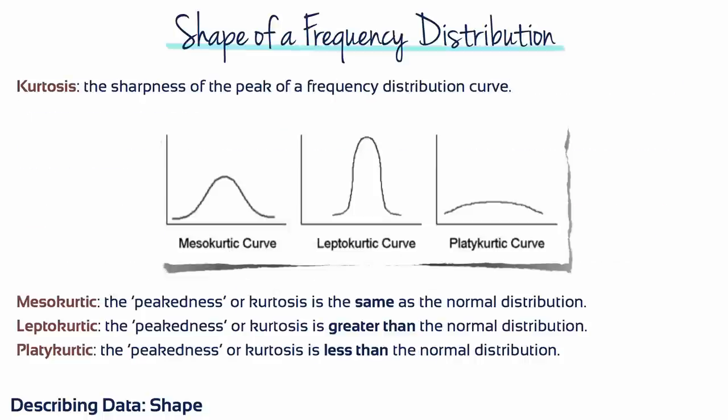In a similar way to the concept of skewedness, kurtosis is a descriptor of the shape of a distribution. Kurtosis measures and describes the peakness of a frequency distribution. A mesocurtic distribution is the same as the normal distribution.